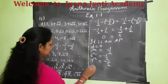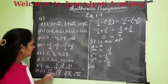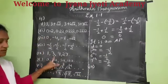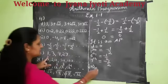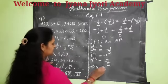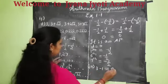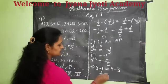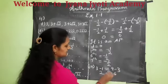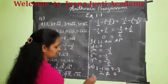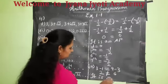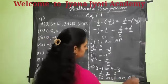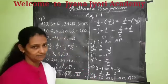Let us see the ninth problem: 1, 3, 9, 27. Here 3 minus 1 should be equal to 9 minus 3. But 3 minus 1 is 2 and 9 minus 3 is 6, which are not equal. So it is not an AP.